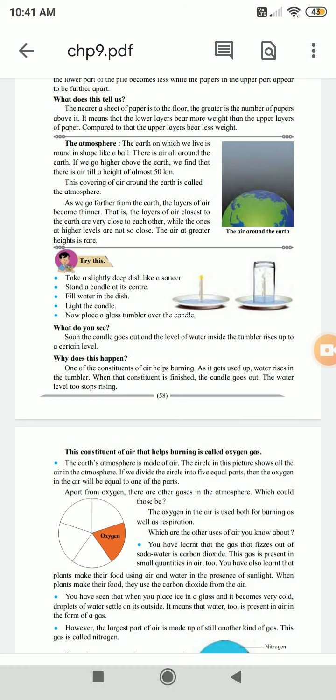This constituent of air that helps burning is called oxygen gas. The earth's atmosphere is made of air. The circle in this picture shows all the air in the atmosphere. If we divide the circle into five equal parts, then the oxygen in the air will be equal to one part of the parts. Apart from oxygen, there are other gases in the atmosphere.